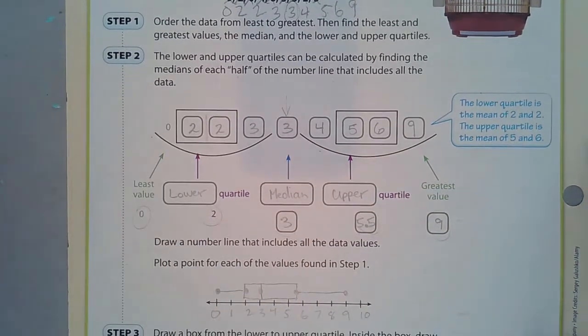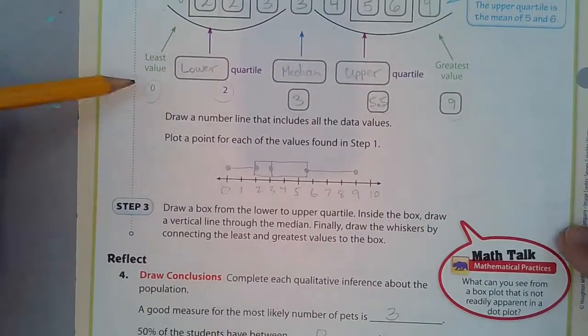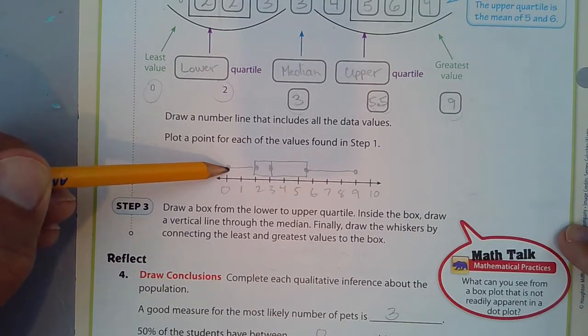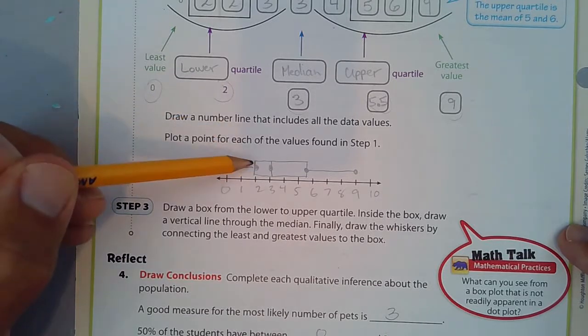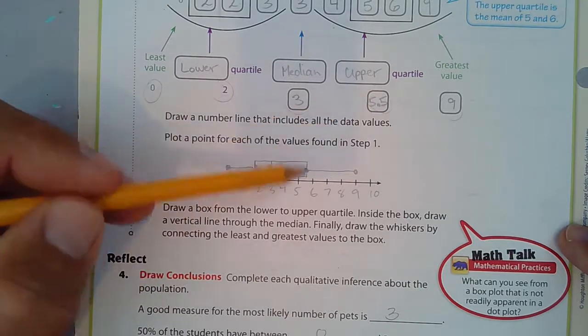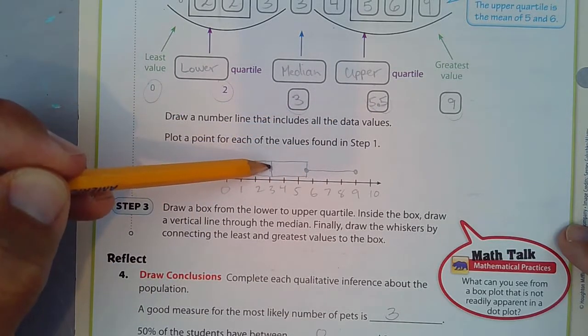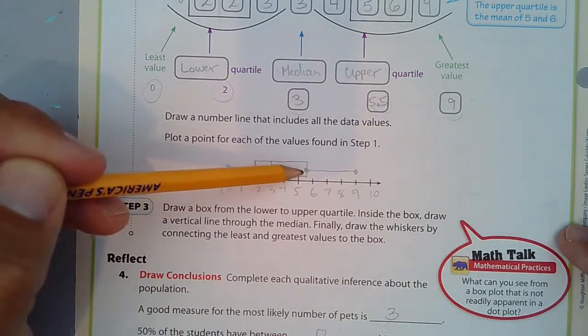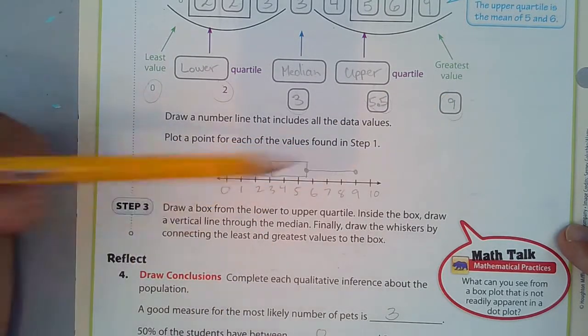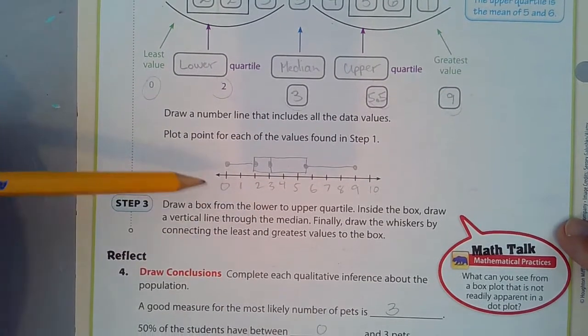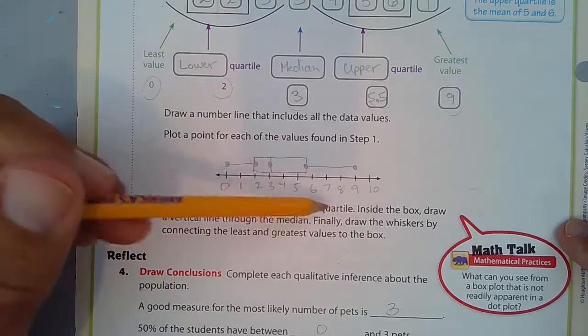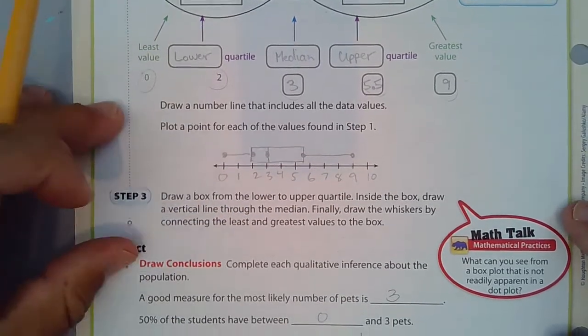Our greatest value is nine, and our least value is zero. Zero, two, three, 5.5, and nine, these are the numbers you use in your box and whisker plot. Zero is the end of the whisker on the left-hand side. Lower quartile, two, is the left-hand side of the box. The right-hand side of the box is the upper quartile, and the line inside the box, it's not always exactly in the middle, is three, the median. And the greatest value is the right-hand side, the whisker extends to the right-hand side.